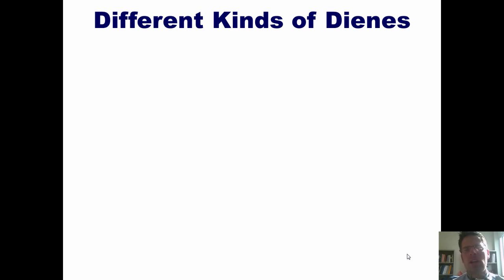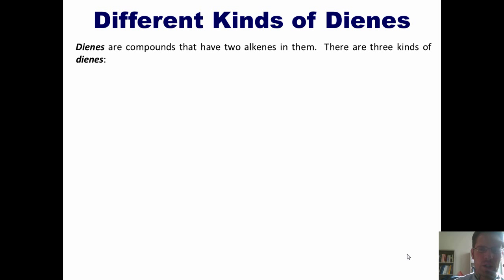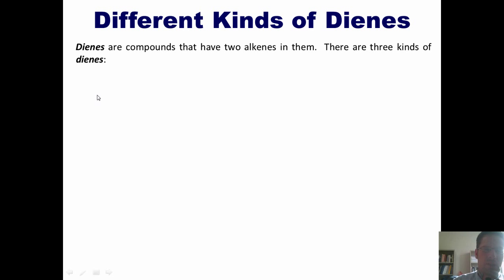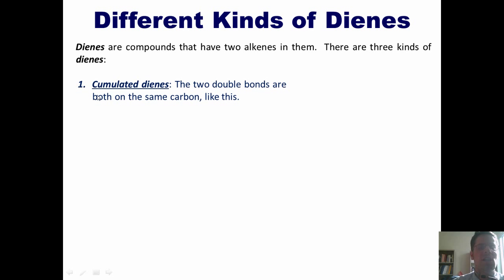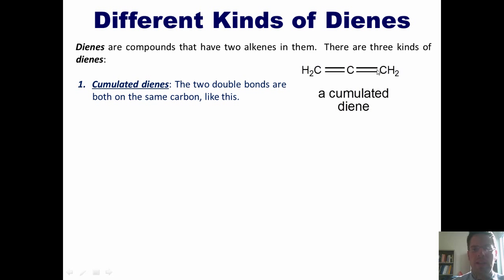Now I want to talk about the subject of dienes. Dienes are compounds that have two alkenes in them. There are three different kinds of dienes we'll worry about in organic chemistry. The first is cumulated dienes — dienes in which the two double bonds are both attached to the same carbon. Cumulated dienes are also sometimes called allenes.